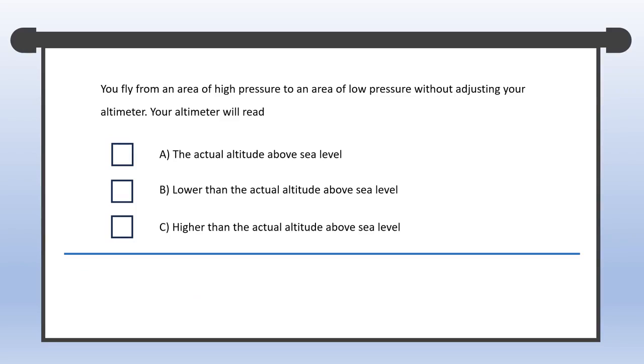You fly from an area of high pressure to an area of low pressure without adjusting your altimeter. Your altimeter will read A. The actual altitude above sea level. B. Lower than the actual altitude above sea level. C. Higher than the actual altitude above sea level. This question isn't as straightforward as previous ones. Before taking the plunge, let's break it down and reword it if necessary. The main scoop here is spotting which altitude, indicated, or actual, is higher. First off, wave goodbye to blatantly irrelevant options like A. I'm guessing you are an airplane pilot, not a submarine pilot. Of course, the actual altitude is above sea level.